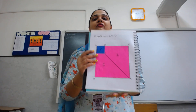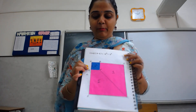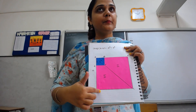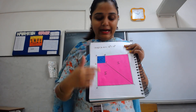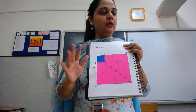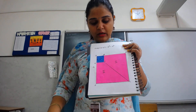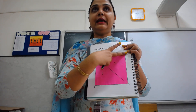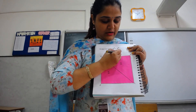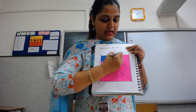I have already labelled the bigger square as A, B, C, D, and the blue one as A, E, F, G. So look at this first portion only. If this complete length is a, then what will be this length? It is a minus b.